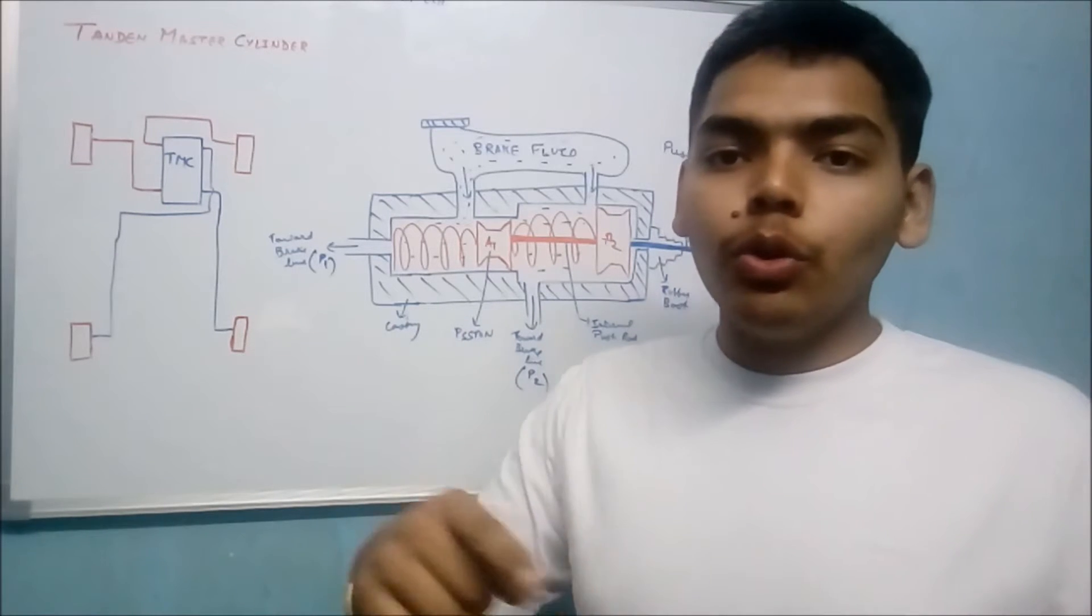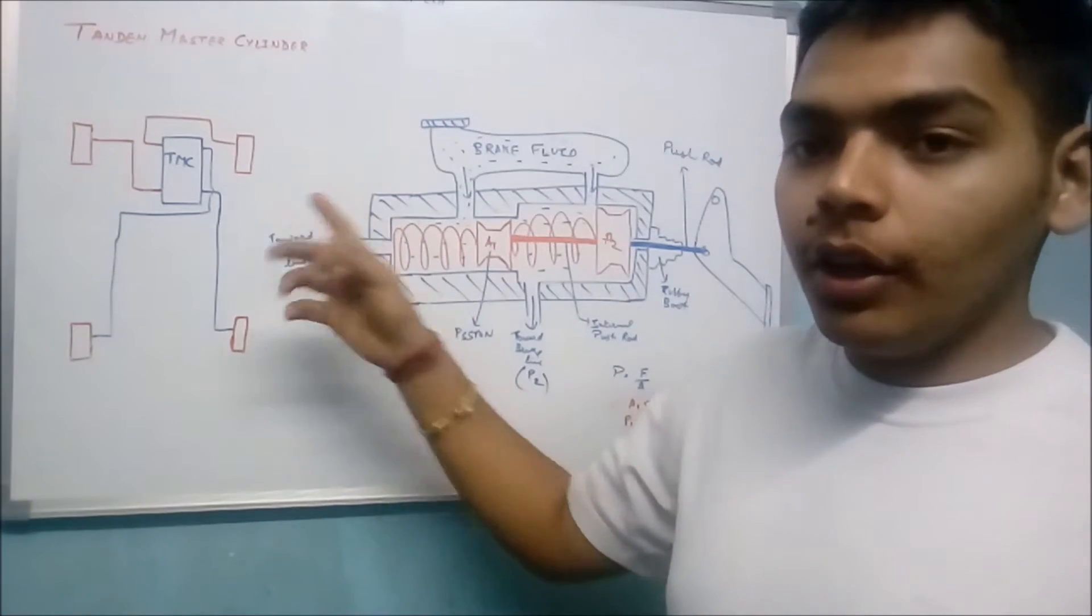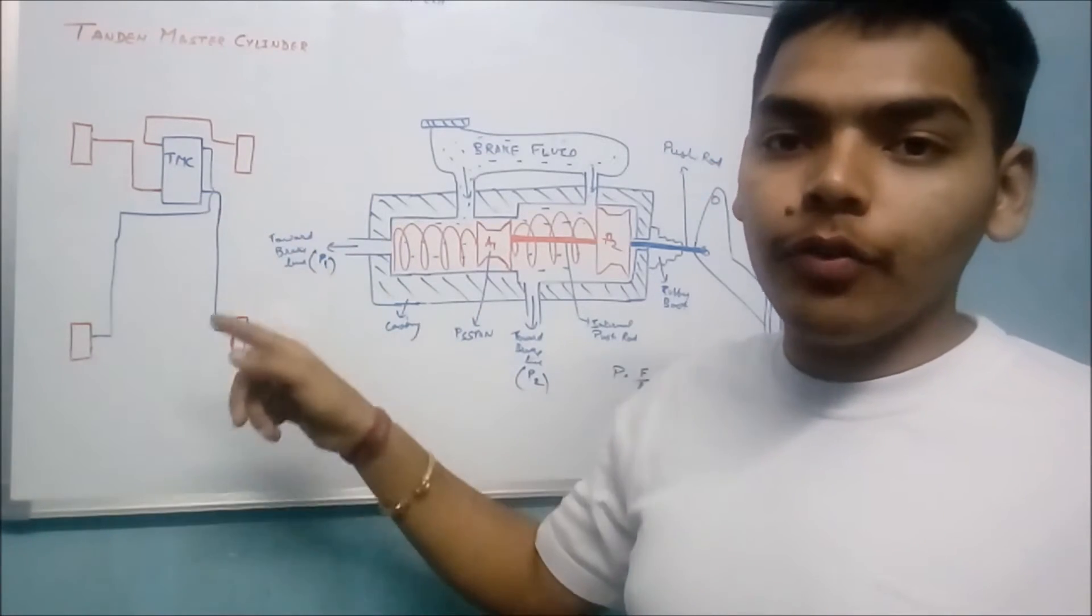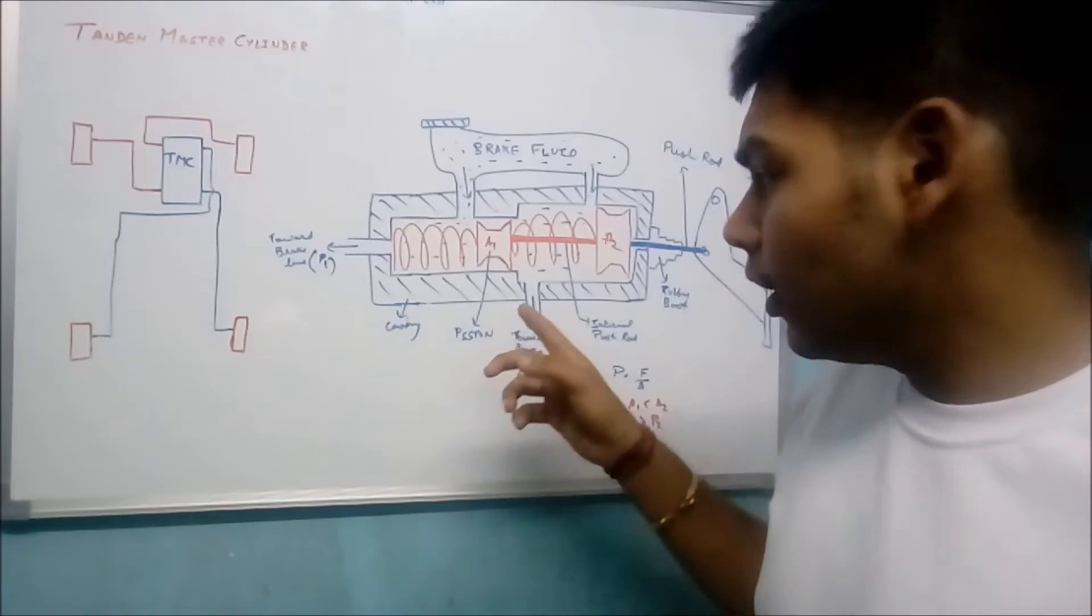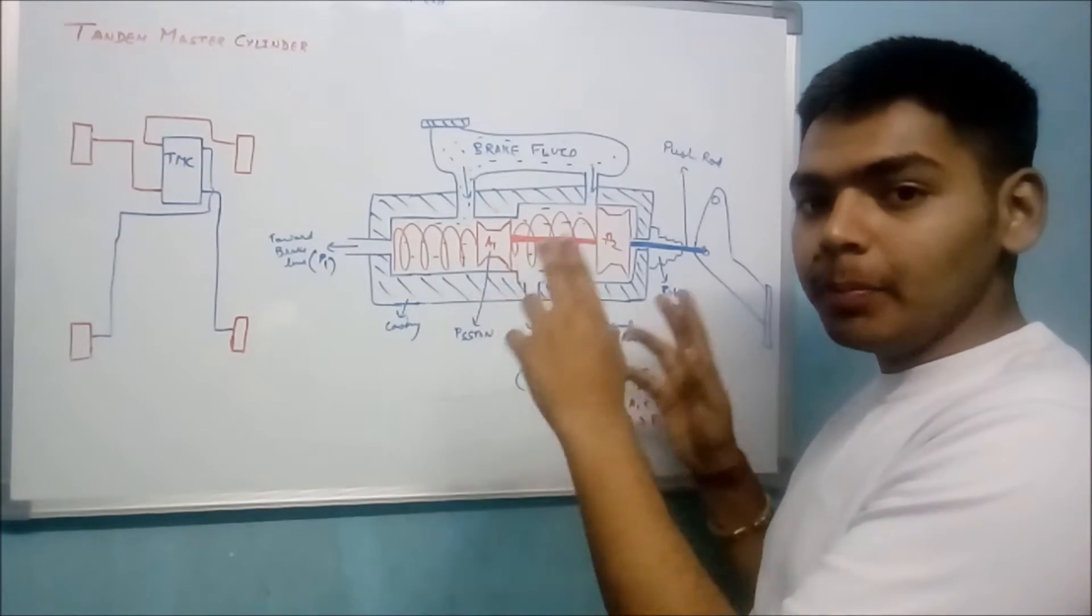So you need to do external biasing of the master cylinder because you need different pressures at different wheels. But in this case, you don't need external biasing—the TMC is pre-biased.